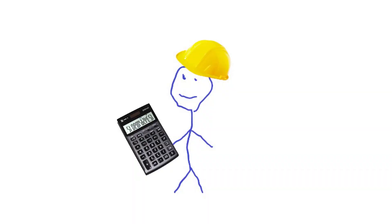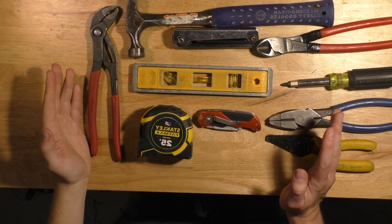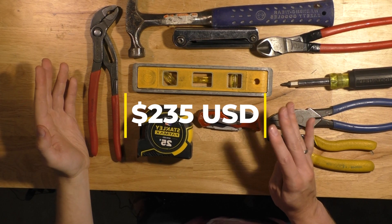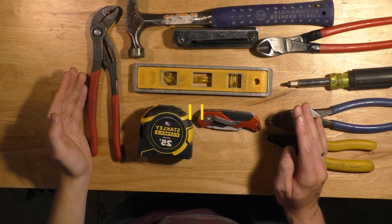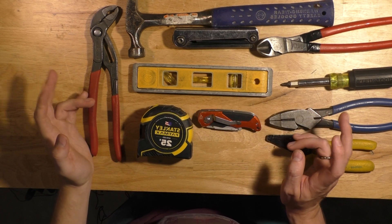If you have your calculator out, so far we have racked up a bill of two hundred and thirty five US dollars. Everything I have mentioned so far is being categorized under the hand tool variety.